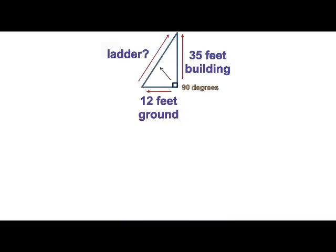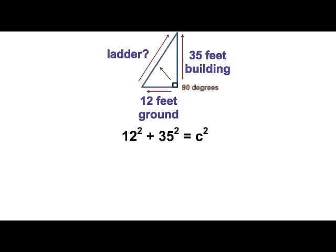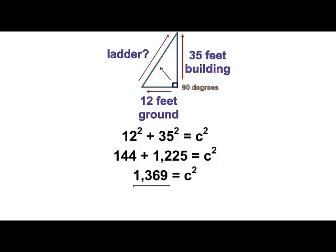She is 35 feet up, and the ladder is 12 feet away from the building. Both of these amounts are the legs, so you'll have to find the hypotenuse. The equation will look like this: 12 squared plus 35 squared equals c squared. 12 squared equals 144, and 35 squared equals 1225. You add those together, you get 1369. Since it's c squared, you'll have to take the square root of 1369, which equals 37. So the ladder has to be 37 feet long.